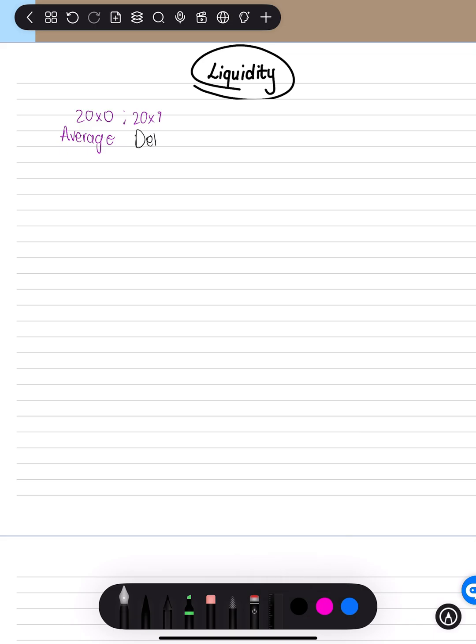Average debtors collection. And the last word in this ratio is period. So again, we are looking at days. So if we are looking at days, you know you need to multiply by 365.